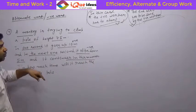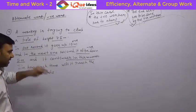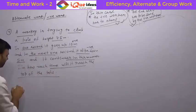So every alternate second it is going up. Every alternate second it is slipping down. In how much time will it reach the top of the pole?